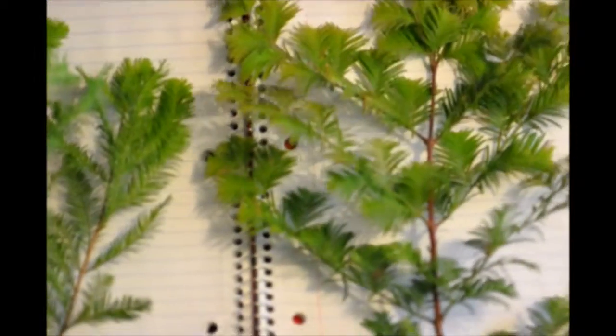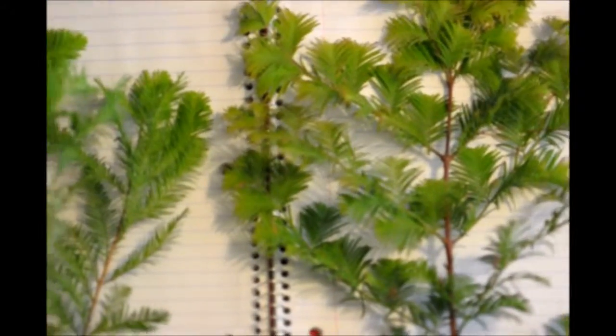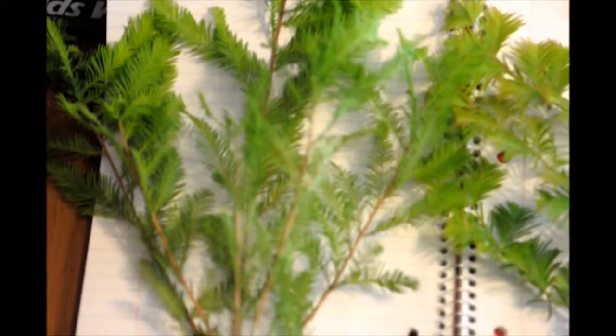So dawn redwood is an opposite leaf branched plant, the bald cypress is an alternate leaf plant.